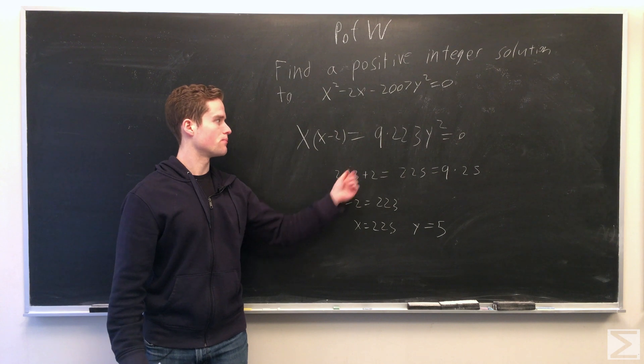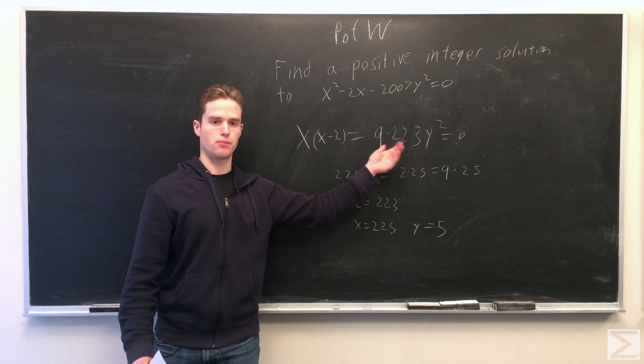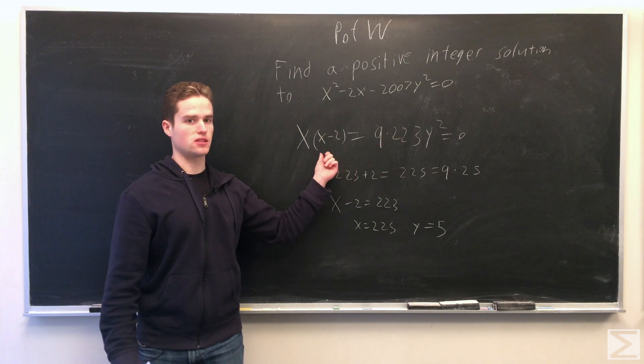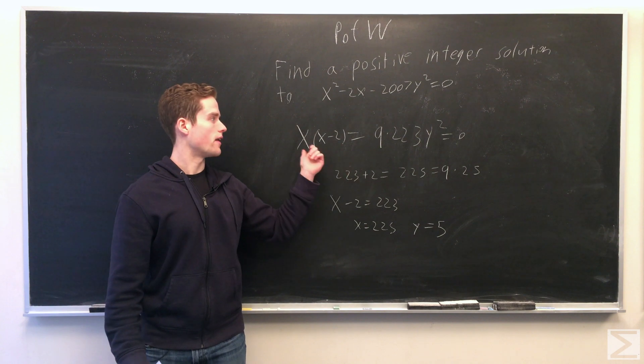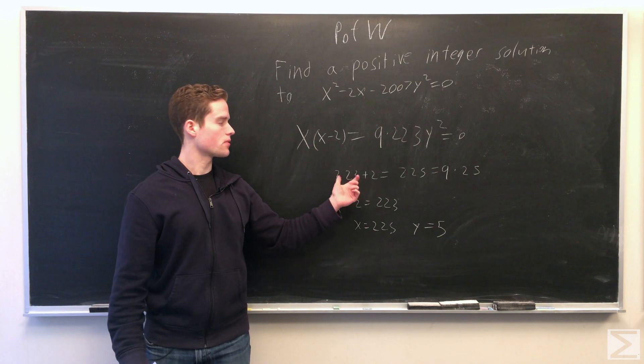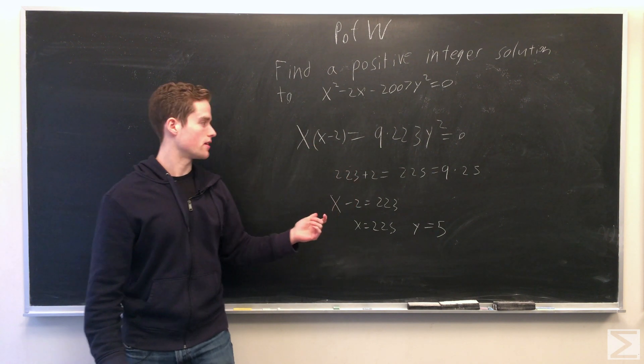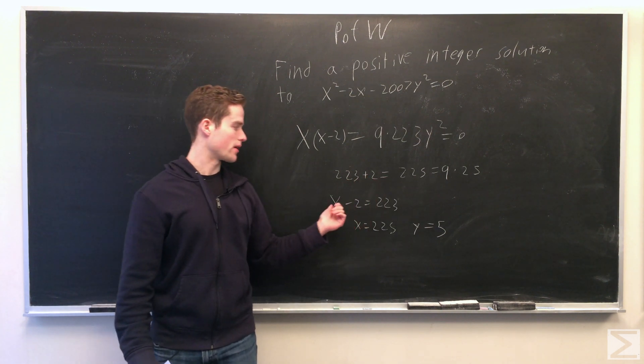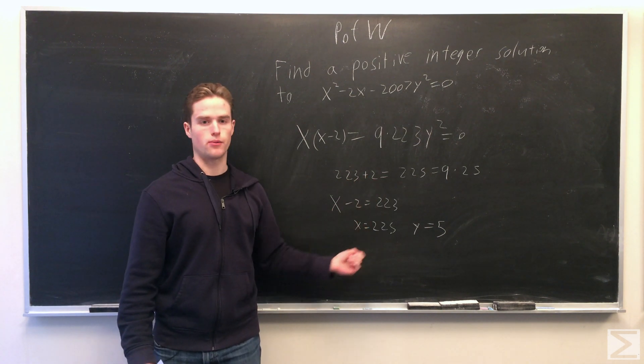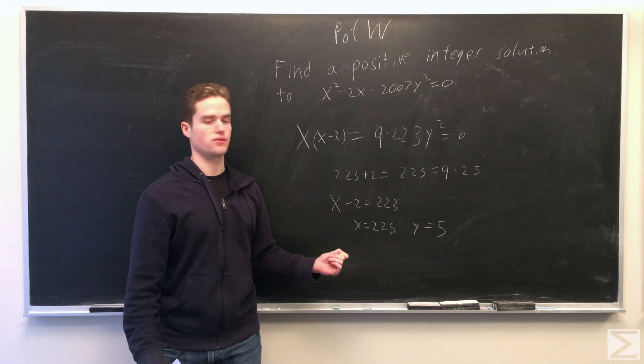If we try different possible values for x minus 2, we want something divisible by 9 so then everything will work out nicely. And 223 fits all this, and we get x equals 225 and y equals 5 as one positive integer solution.